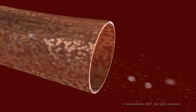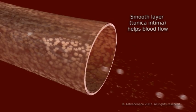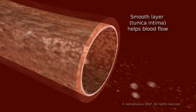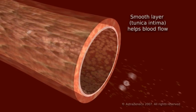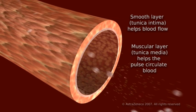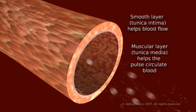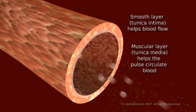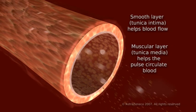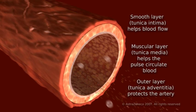A normal artery wall consists of three main layers: a thin, smooth layer that lines the inside of the artery to help blood flow; a muscular, elastic layer that helps the artery pulse to push blood around the body; and a tough outer layer to protect the artery.